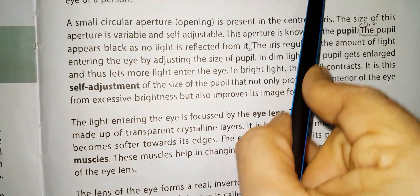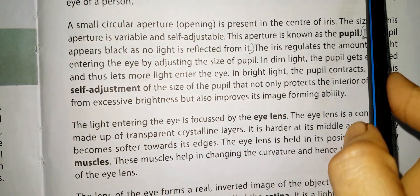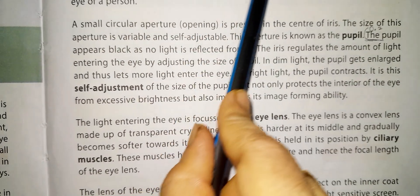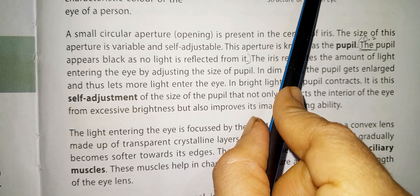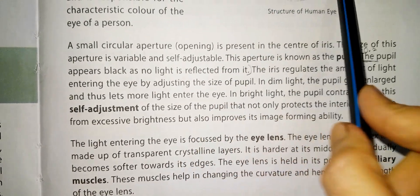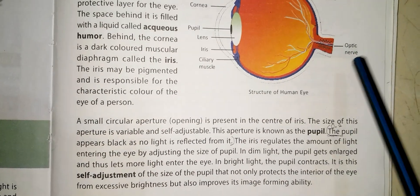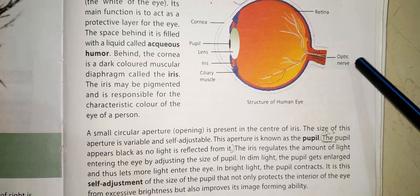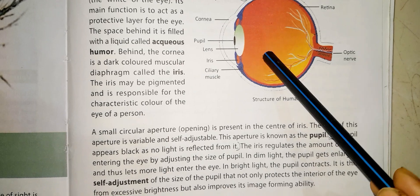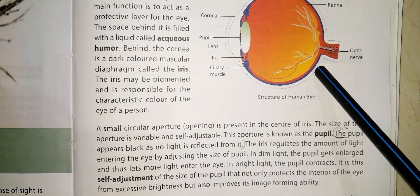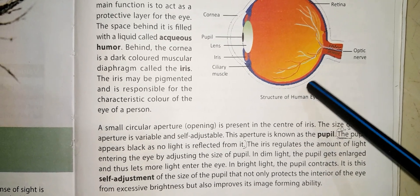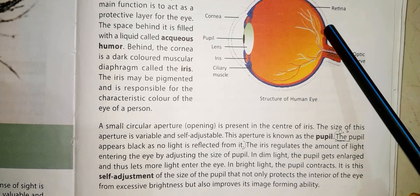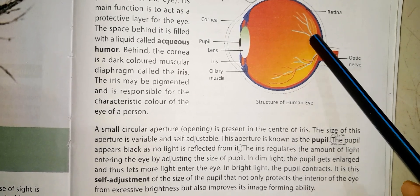In the center of the iris, there is a small circular aperture or opening. The size of this aperture is variable and self-adjustable. This aperture is known as the pupil. The pupil appears black as no light is reflected from it. The iris regulates the amount of light entering the eye by adjusting the size of the pupil.